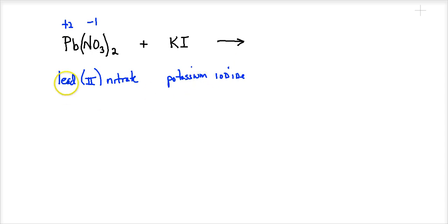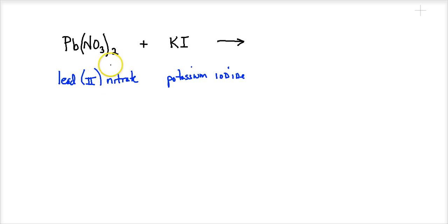We're starting with lead(II) nitrate and potassium iodide and trying to make a double replacement reaction occur — in other words, seeing if a precipitate forms, sometimes called asking whether the reaction goes to completion. First, let's go to Table F and check if lead(II) nitrate is soluble, because if it's not soluble it stays as a solid and its ions can't double replace with KI.